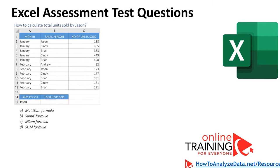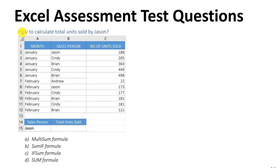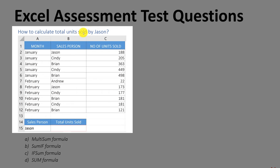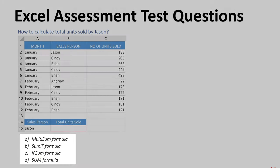Very frequently, you might be asked how to solve a specific problem during an Excel assessment test. For example, in this question, you will be asked how to calculate total units sold by Jason. You are presented with a table showing months, salesperson, and number of units sold. One of the salespeople is Jason, but there are also others. The question is: what would you use to find the total units sold for Jason? The choices are multi-sum, SUMIF function, IF-SUM function, or SUM formula.